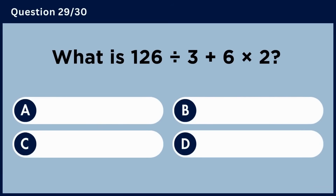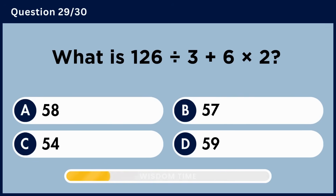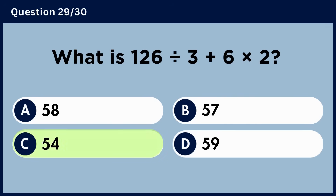What is 126 divided by 3 plus 6 multiplied by 2? Answer C: 54.